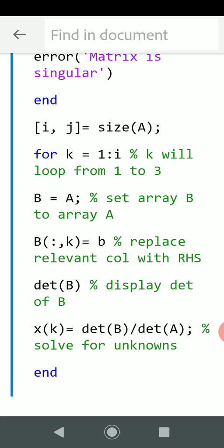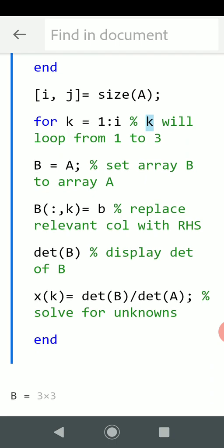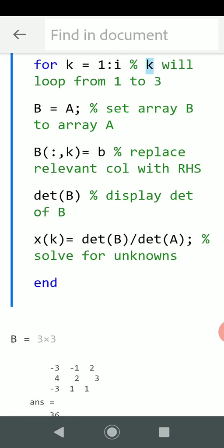We go around the loop again, so k is now 2. B equals A, so we reset B to A. And then all the rows, column 2, is equal to lowercase b. Then we get the det of B, the new